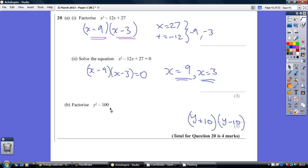So you get one like this, it's going to be y plus 10, y minus 10. Had it been y squared minus 64, it would be y plus 8, y minus 8.